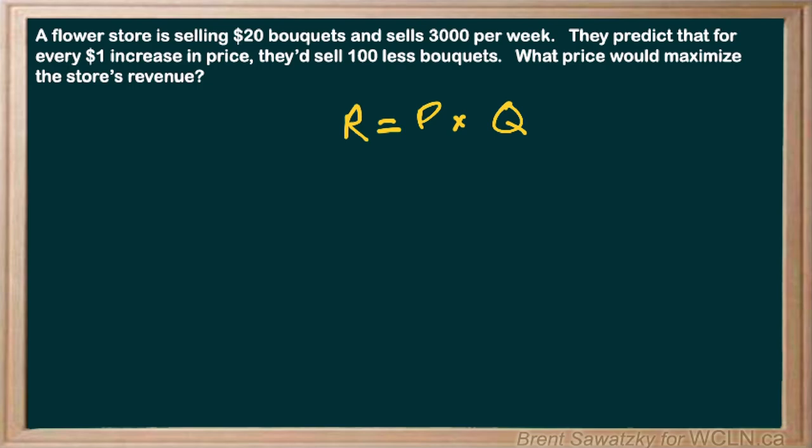So we're ready to work from there. And so let's plug in what we know about this particular problem. So what they're saying is currently, or now, is that they're selling them. The price is $20. So we can just replace the P with $20, and they're selling 3000. So there they go. They've got a bit of a good gig going on there. And so we can work that out, $60,000.